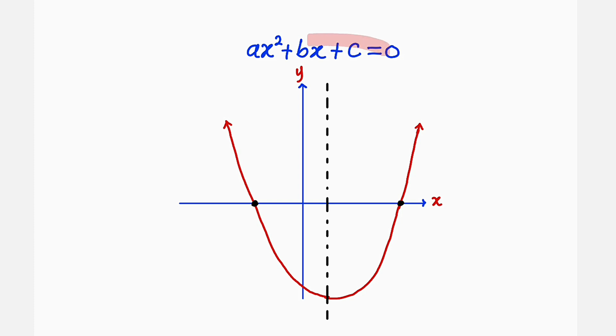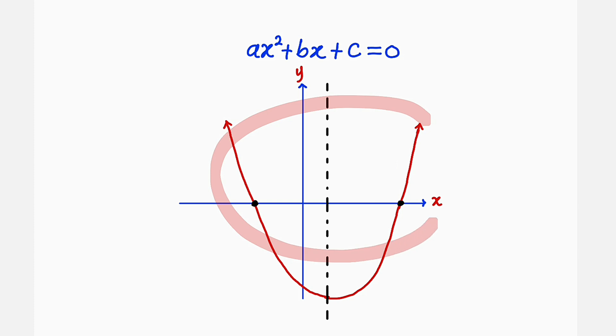As you know, this is the general form of any quadratic equation: ax squared plus bx plus c equal to zero. And if you graph this, you're going to obtain something like this.